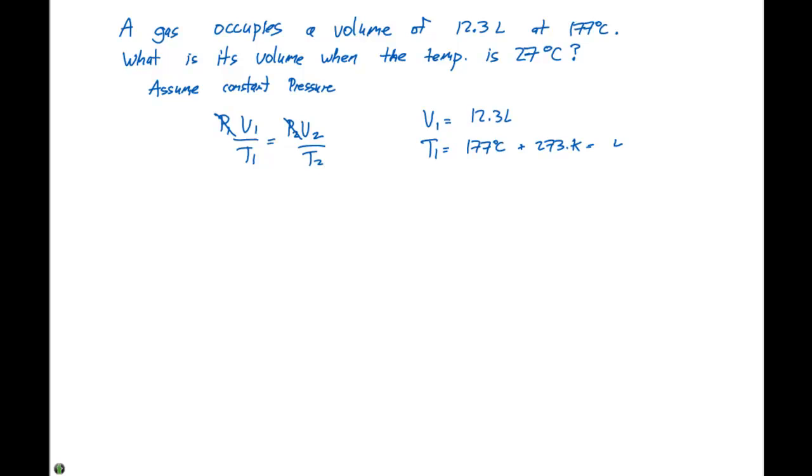That's going to give us a value of 450 Kelvin with the zero being a significant figure. Our second volume is what we're trying to solve for. And our second temperature is going to be 27 degrees Celsius plus 273 Kelvin.